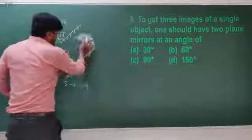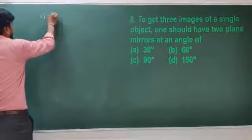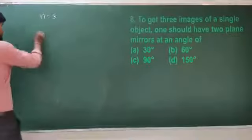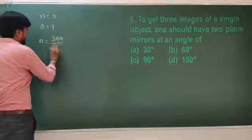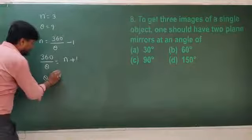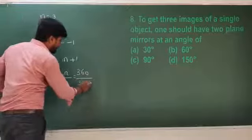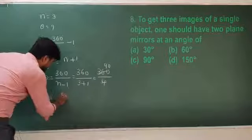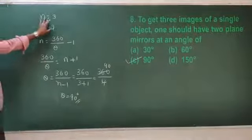Next question: to get 3 images, how many degrees should the two plane mirrors be inclined? N = 3, so using N = 360/θ − 1, we get 360/θ = N + 1 = 4, therefore θ = 360/4 = 90 degrees. Two plane mirrors placed perpendicular to each other will give 3 images.